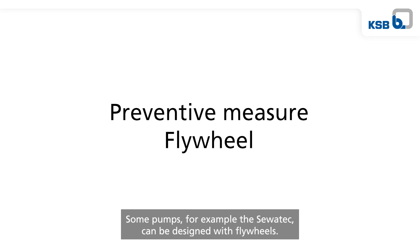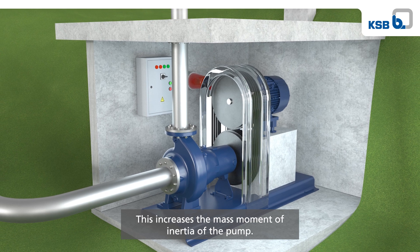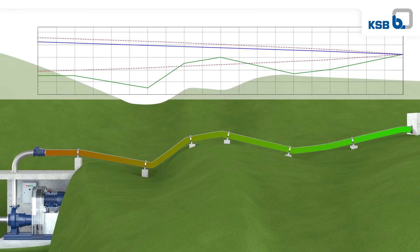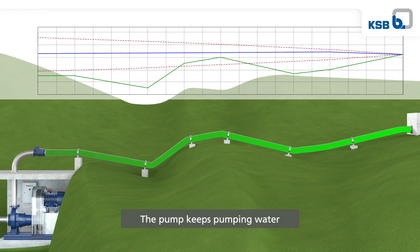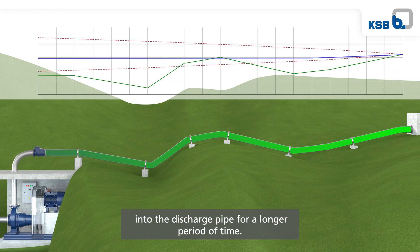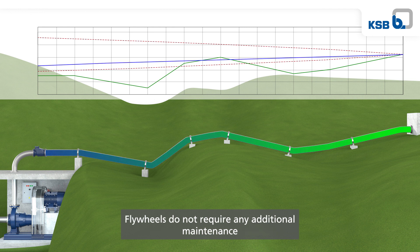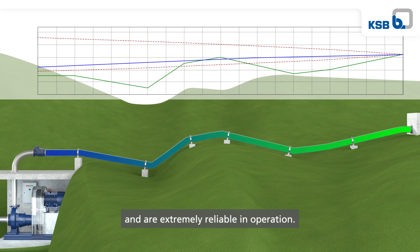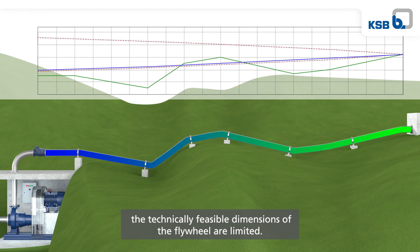Some pumps, for example the SaverTech, can be designed with flywheels. This increases the mass moment of inertia of the pump. If the pump fails, the pump speed drops slower, and the pump keeps pumping water into the discharge pipe for a longer period of time. As a result, the first negative pressure wave can be significantly reduced. Flywheels do not require any additional maintenance and are extremely reliable in operation. However, the longer the pipeline, the larger the flywheel would have to be, and in the case of very long pipelines, the technically feasible dimensions of the flywheel are limited.